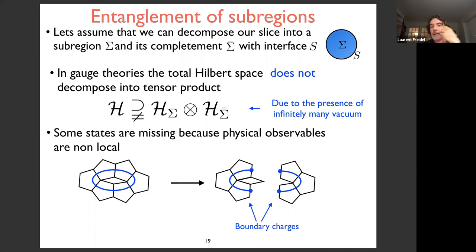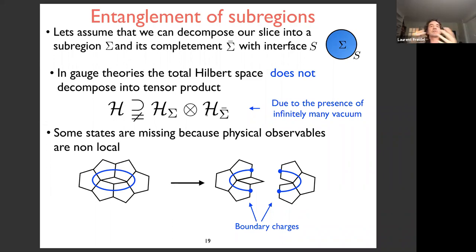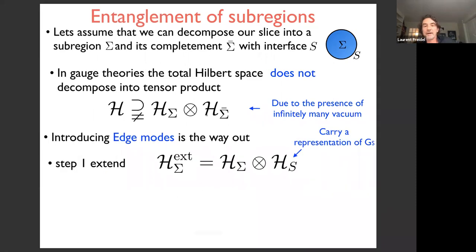Going from non-relativistic to relativistic field theory, the vacuum is more entangled; going from relativistic to gauge theories, the entanglement gets deeper; and going from gauge to gravity, it becomes so important that holography should emerge. The way out is to introduce edge modes — states carrying representations of the boundary symmetry. The first step is to extend the space attached to sub-region sigma by the naive bulk space plus edge modes or corner Hilbert space, which carries a representation of the corner symmetry group.